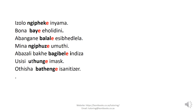Let's look at some example sentences. Izolo ngipege inyama. Buwana baye eholidini. Abangani balale esipelela. Mina ngipuze umuti. Abazali bakibele indiza. Usisi utunge imaski. Otisha batenge isanitiza. In all these sentences, the verb ends in an E — pege, baye, balale, lipuze, bakibele. This is how we recognize the past tense verb.